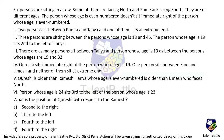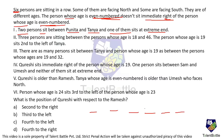Six persons are sitting in a row. Some are facing north and some are facing south. They are of different ages. The person whose age is an even number does not sit immediately to the right of another person whose age is an even number. Two persons sit between Punita and Tanya, and one of them sits at an extreme end. There are six positions total. Let us assume Punita is at one extreme end and Tanya is positioned with two persons between them.